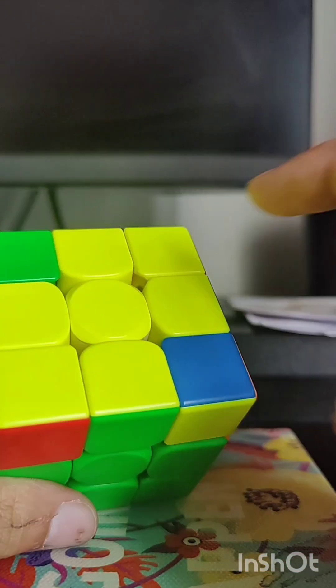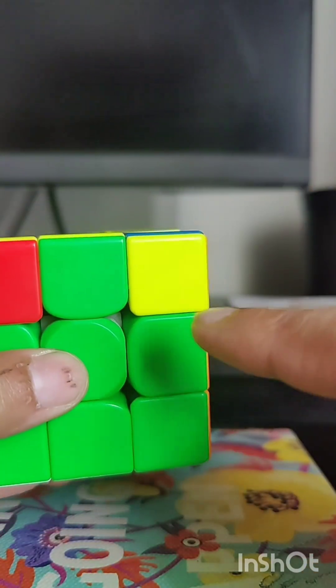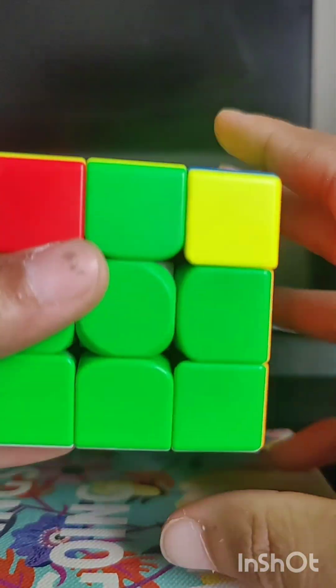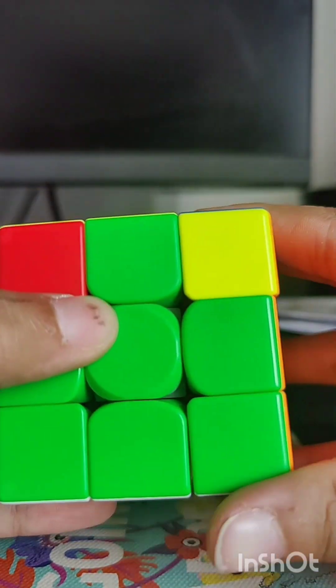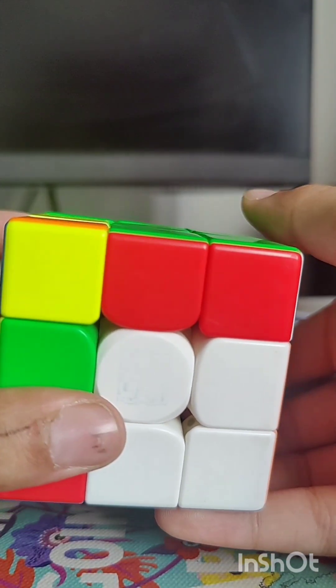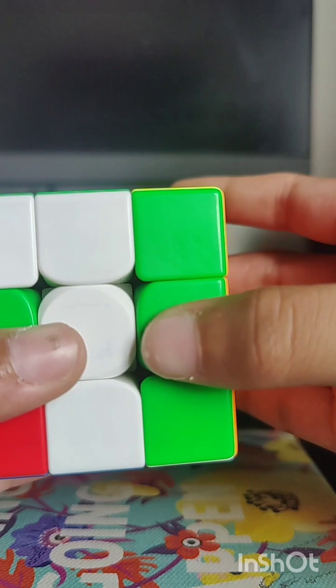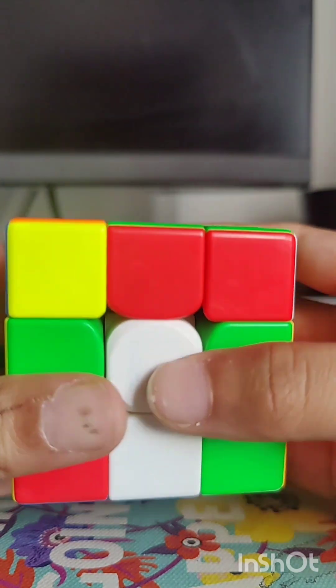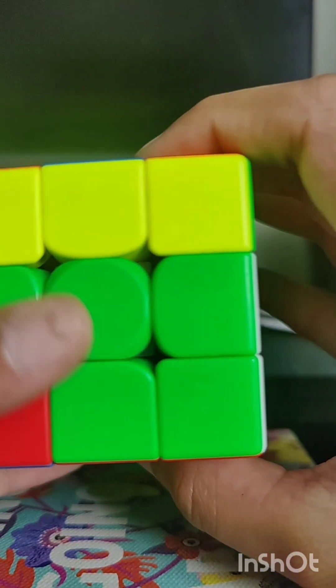Next case is when these two are solved and there's a corner in front. So what you have to do is F prime, then you have to do wide R, and wide R prime.